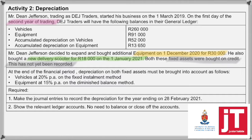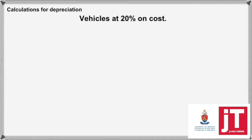At the end of the financial period, depreciation on both fixed assets must be brought into account. We have to depreciate vehicles on the fixed installment method, or straight line or cost price method, for 20% per annum. And then equipment at 15% per annum on the diminished balance method. Make your journal entries for depreciation at year end in the general journal and show the accounts in the general ledger. Before you start, it's very important to know which financial year you are working with. So with year-end adjustments, always draw your timeline.